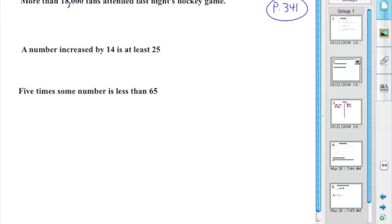So the first one we're going to look at is more than 18,000 fans attended last night's hockey game. First, we're going to assign a variable. We'll call it H because it's a hockey game. More than 18,000 fans attended last night's game. So a simple inequality right there. H is greater than 18,000.